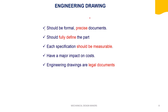Engineering drawing is a formal and precise document. It should fully define the part, and each specification, dimension, and tolerance mentioned in the engineering drawing should be measurable. If it is not measurable, it is meaningless. Engineering drawings also have a major impact on the cost of a part.